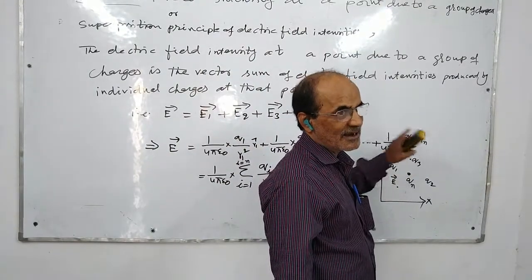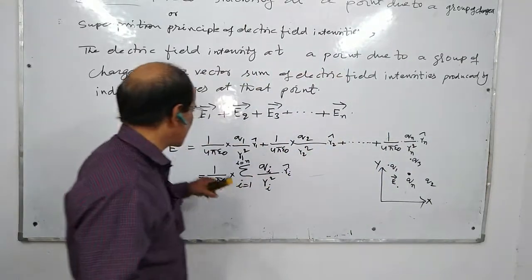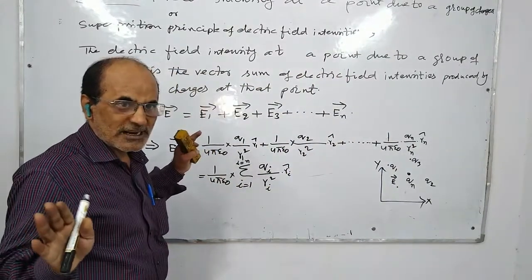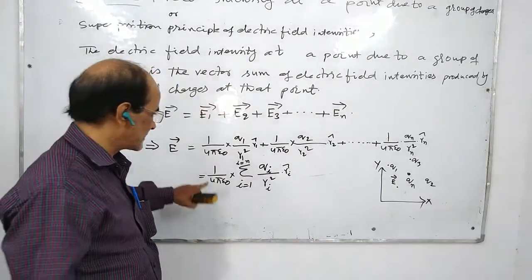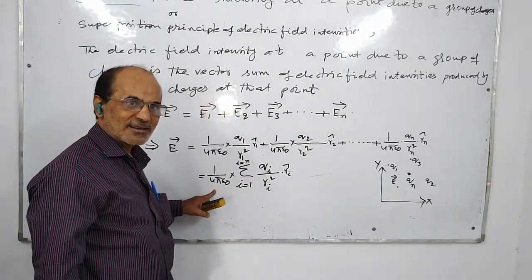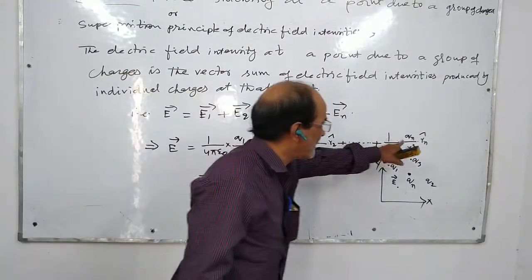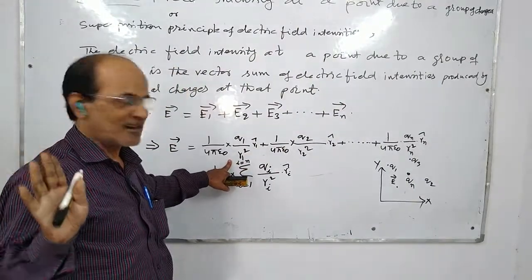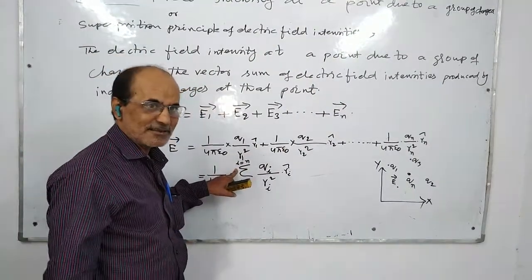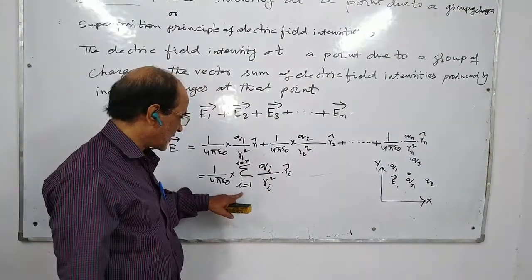1 by 4πε₀ is common. So, 1 by 4πε₀ Q1 by R1² plus Q2 by R2² and so on. Summation of Qi by Ri². This one. Now, if placed here in a large group.